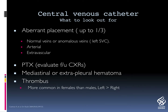What do we want to look out for in the setting of central venous catheters? Aberrant placement, which happens in up to one-third of cases. We are evaluating for pneumothoraces and for mediastinal or extrapleural hematoma. Sometimes we are asked to evaluate for thrombus, which is more common in females than males, and it happens more commonly with lines on the left than on the right.